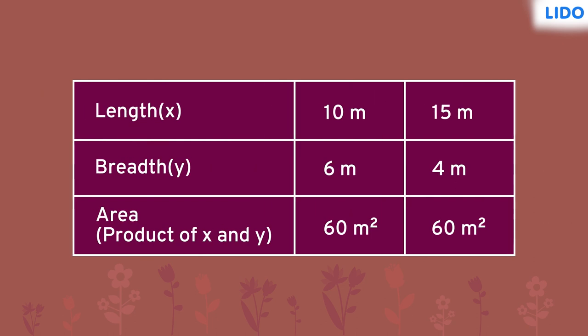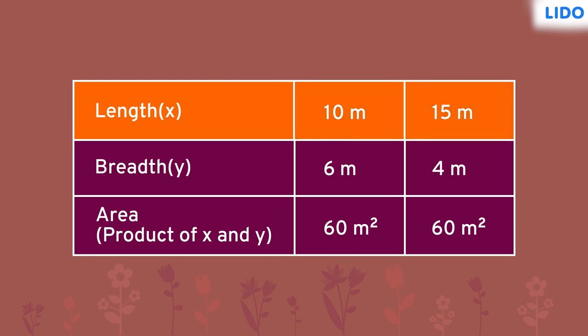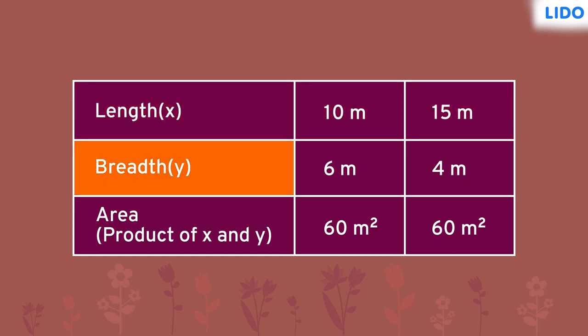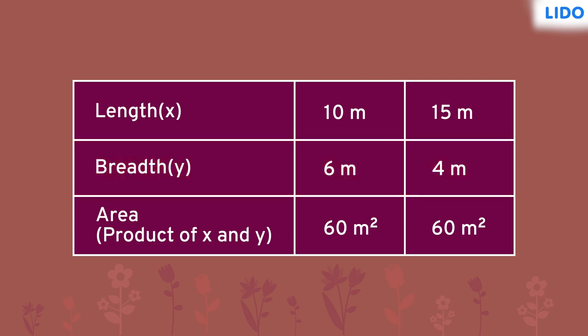Observe the dimensions carefully. As the garden's length increases from 10 to 15, its breadth decreases from 6 to 4, and that's how the area of both the gardens remains the same. In general, when an increase in one quantity results in a decrease in the other, the relation between these quantities is known as an inverse relation — just like in the case of length and breadth when the area remains the same.